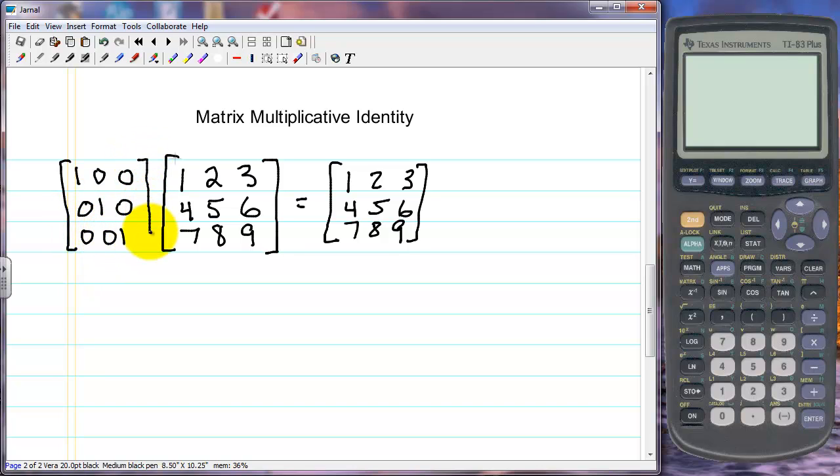The multiplicative identity is a matrix where we have 1s down the diagonal and the other positions are 0. Multiplicative identities only occur for square matrices. If this was a 4 by 4 then we would have a diagonal of 4 1s, etc.